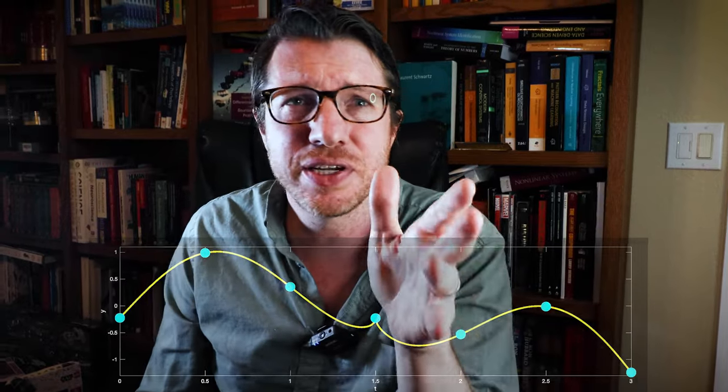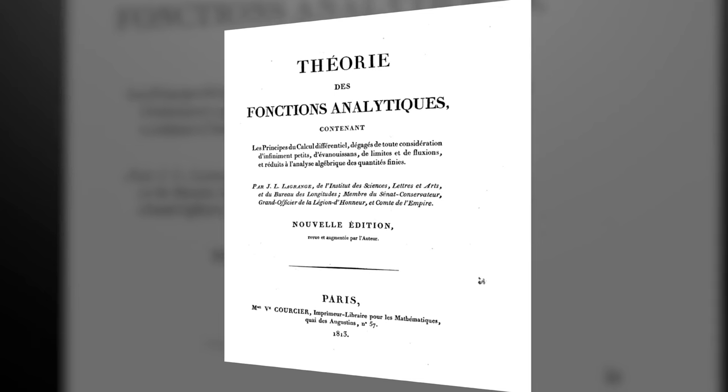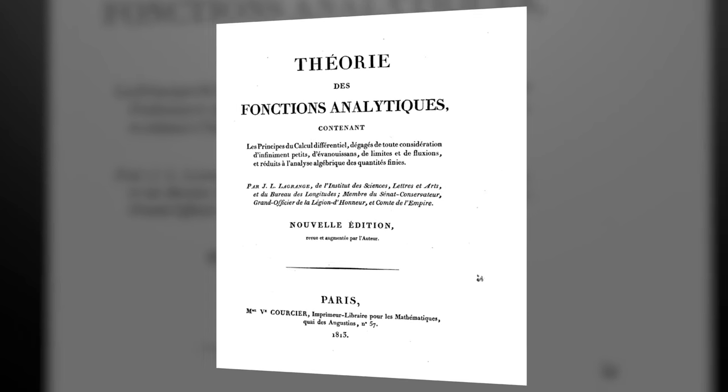The precise definition of limits themselves wasn't worked out until the 19th century. Before this, Lagrange in 1799 published his theory of analytical functions.